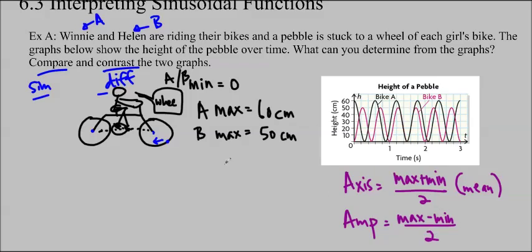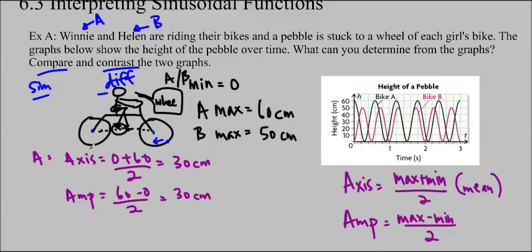If we do that, we can see that for A, the axis is equal to 0 plus 60 divided by 2, which is 30 centimeters. And for the amplitude, it's 60 minus 0 divided by 2, which is also 30 centimeters. The axis is, in this case, where the wheel is mounted. So we call that the axle, the axle of a wheel where it's mounted. And the amplitude is going to be the radius because that's how far away from the middle we can get. So it's called the radius. You can see that if I did the top minus the bottom divided by 2, that's the diameter, and then divide by 2, we get the radius.